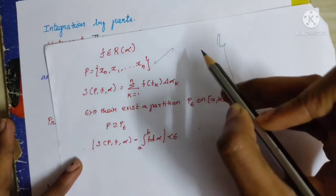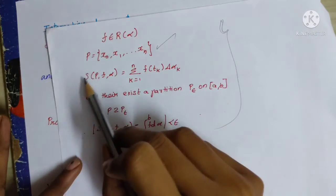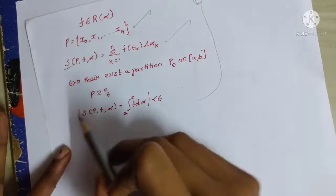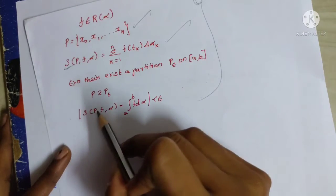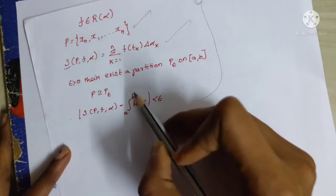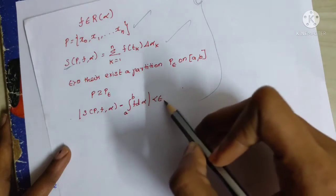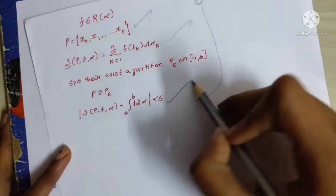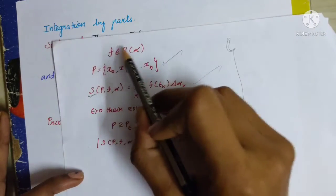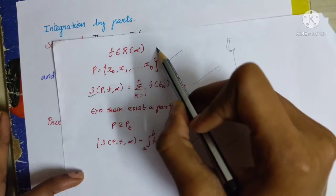For a partition P, the Riemann-Stieltjes sum S(P, f, alpha) minus the integral from a to b of f d(alpha) is less than epsilon. When this condition is satisfied, that is when f belongs to R(alpha).